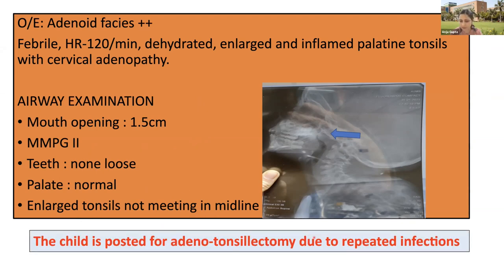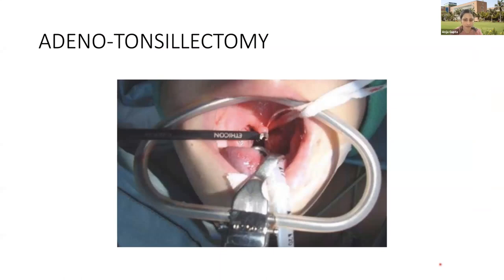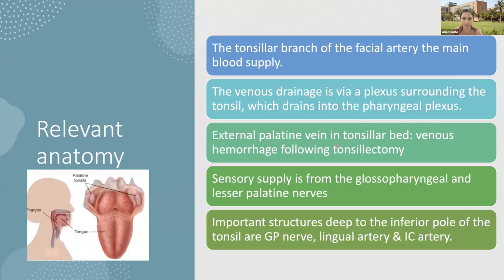The child was posted for adenotonsillectomy due to history of repeated infections. Coming to anesthetic considerations of adenotonsillectomy, we should be familiar with relevant anatomy. The tonsillar branch of the facial artery is the main blood supply to the tonsils. Venous drainage is via the plexus surrounding the tonsil which drains into the pharyngeal plexus. The external palatine vein in the tonsillar bed is the main cause of venous hemorrhage during tonsillectomy. Sensory supply is from the glossopharyngeal and lesser palatine nerves. Important structures in relation to the inferior pole of the tonsil are the glossopharyngeal nerve, lingual artery, and internal carotid artery.